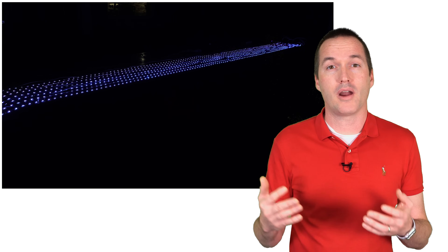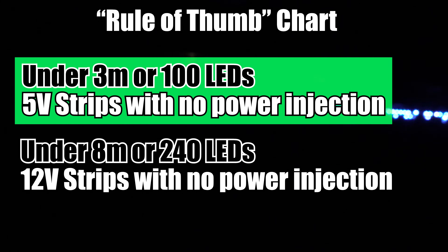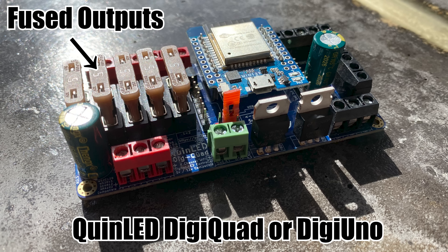Quick recap: if your LED strip looks reddish toward the end, you've probably got voltage drop issues. The easiest fix is to turn down the brightness so each LED requires less current. If lower brightness isn't acceptable, you can inject power at different points by running additional wires back to the power supply, connecting positive to positive and negative to negative. To avoid voltage drop in the first place you can use higher voltage LEDs, but be aware that higher voltage increases the potential for fire from faulty wiring. Five-volt strips are the safest — safe for runs under 3 meters or fewer than 100 LEDs at full brightness without power injection. Twelve-volt strips can be used up to about 8 meters or 240 LEDs. In all cases, adding a fuse to your power wire is a good practice, and using a power supply with short circuit protection is always a good idea.